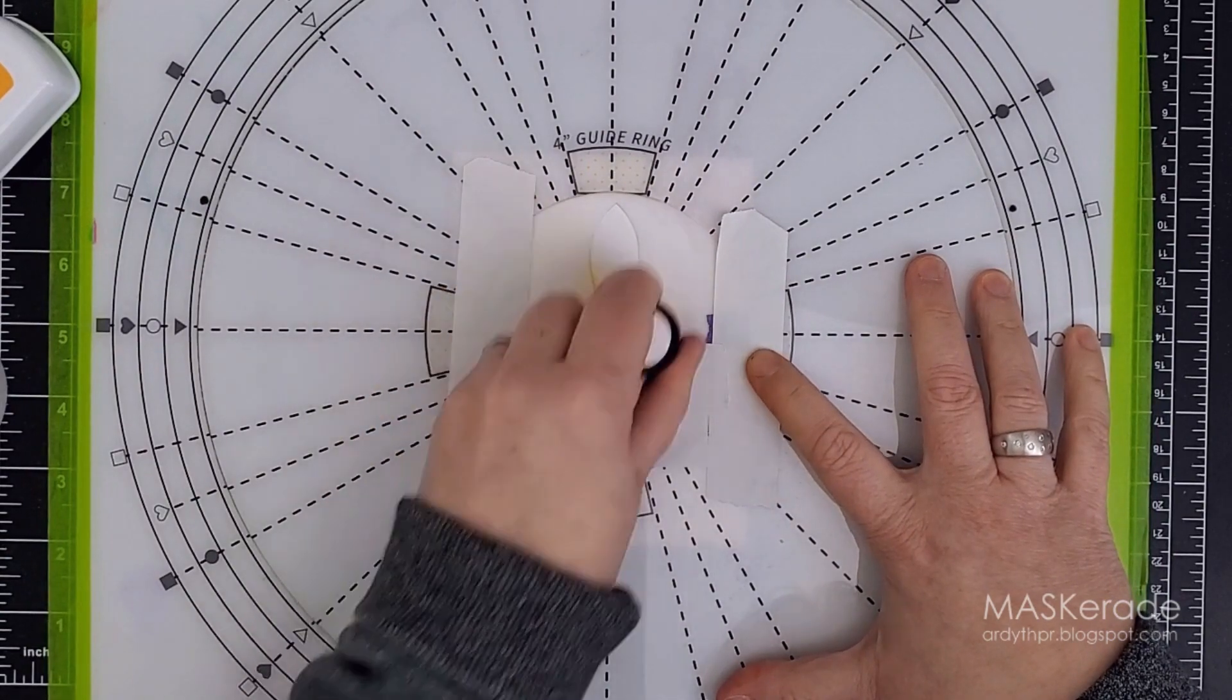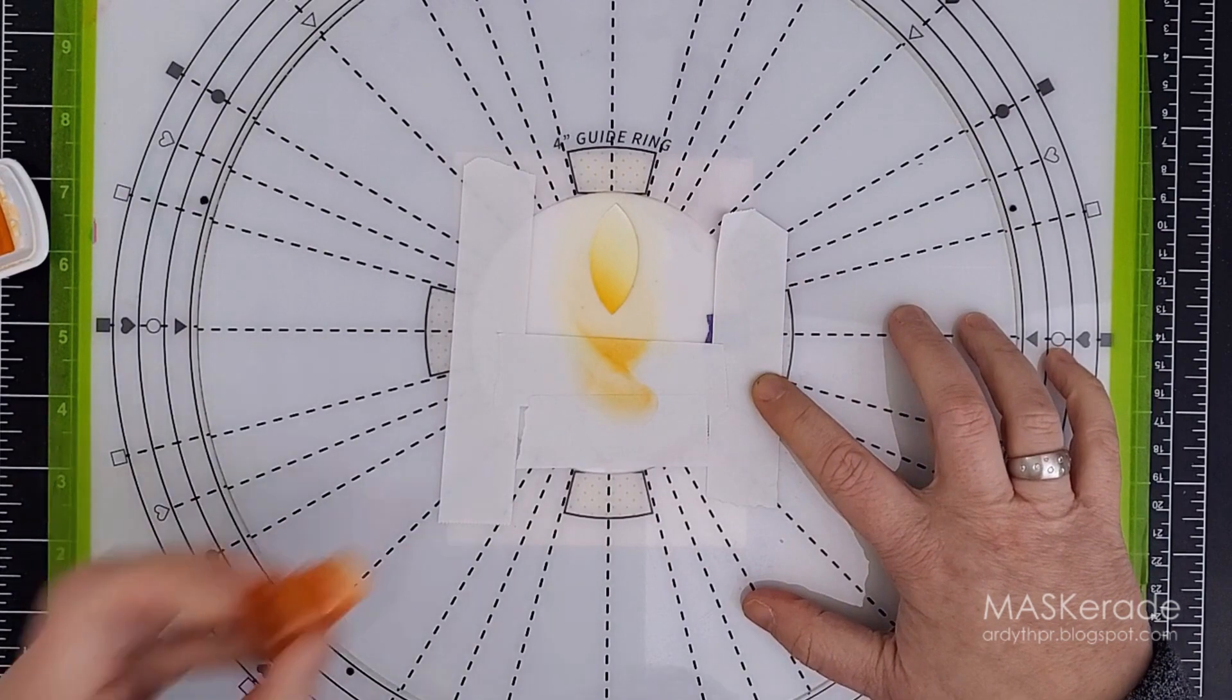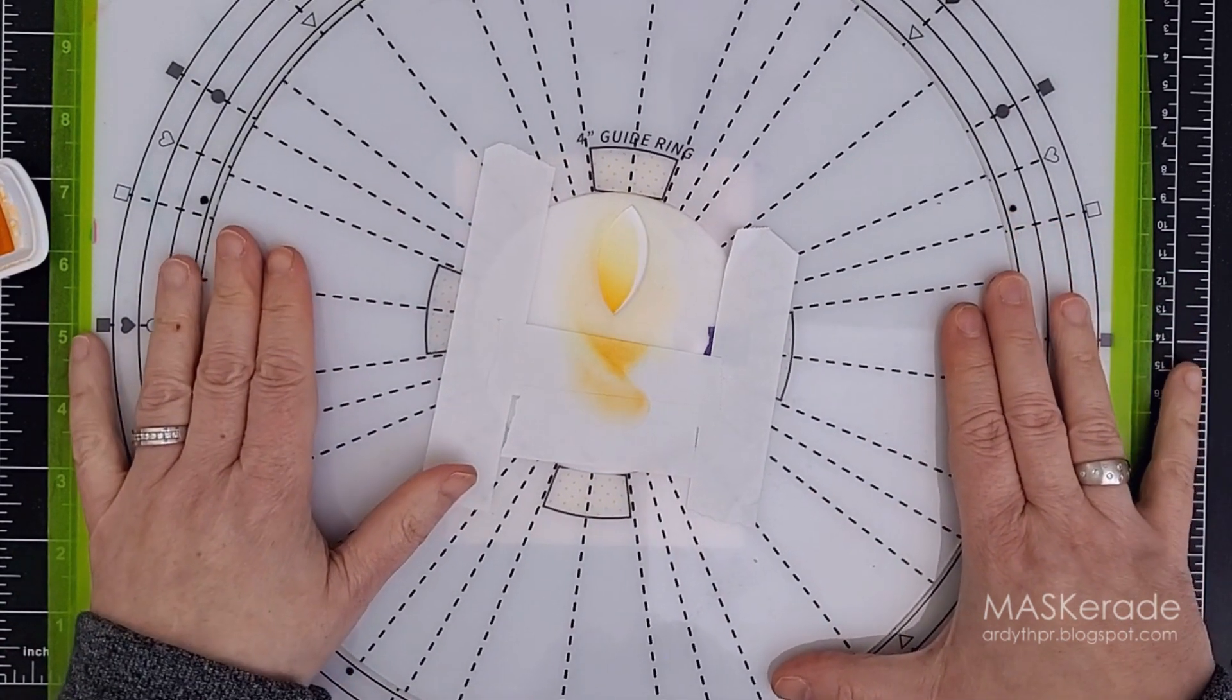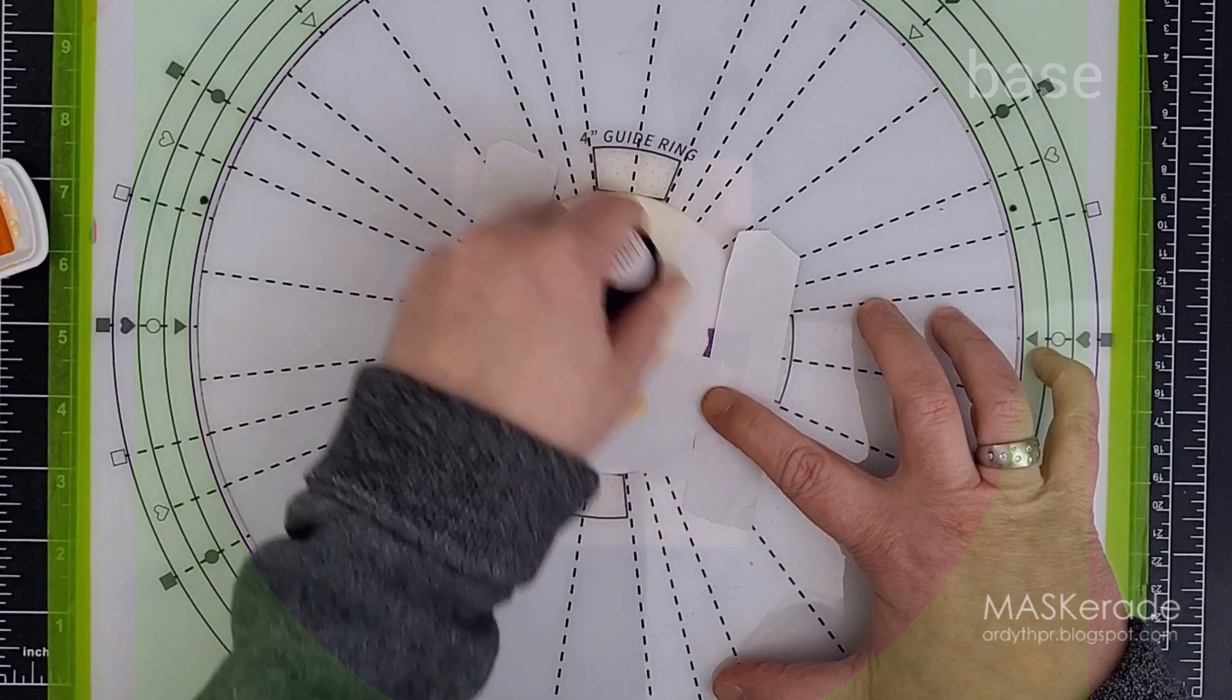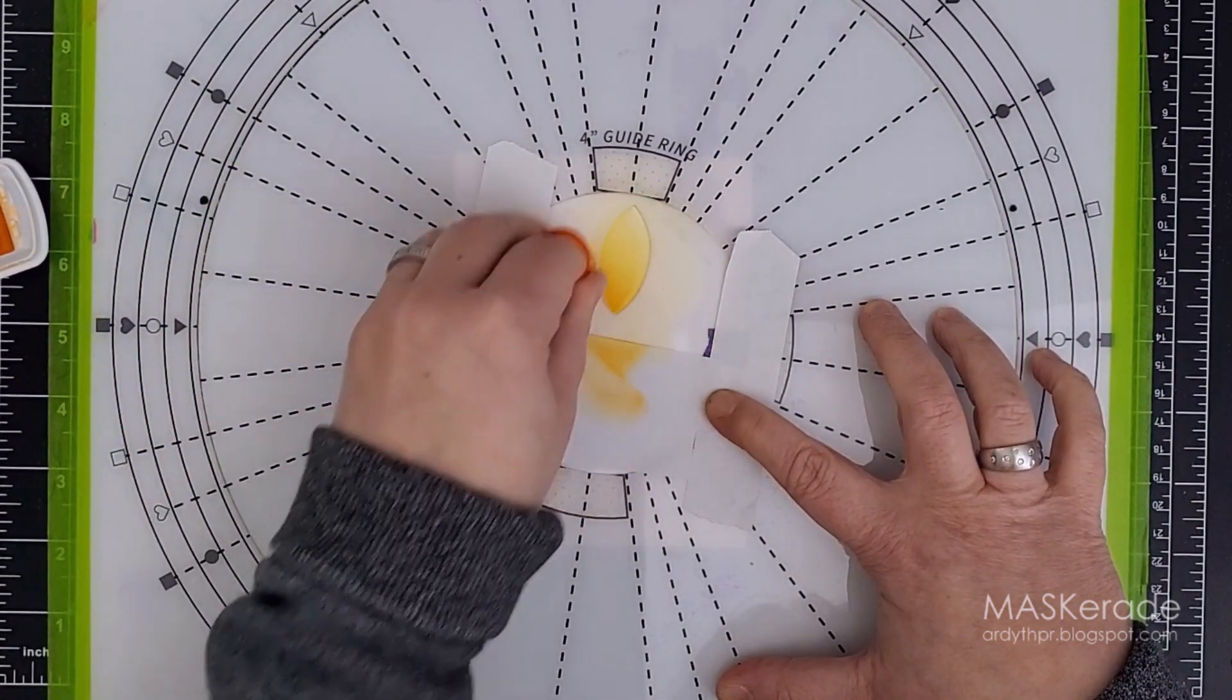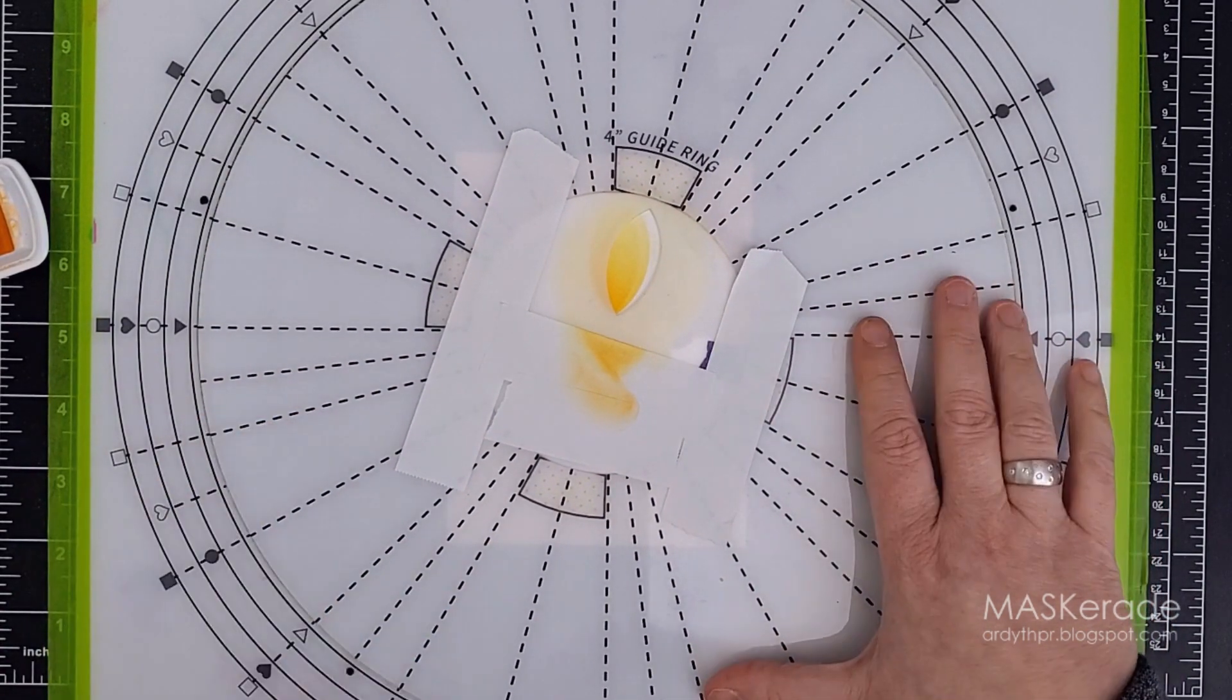I added some depth with some Tiki Torch ink and a dauber just on the bottom edge of the petal. Next, here's the unique and oh-so-fun part of this tool. You rotate the stencil within the base, lining up the markings on the stencil guide with the base for precise angles. Here I moved it about seven degrees to the right and then blended the yellow and orange inks through again. Then I moved another seven degrees to the right and blended the ink again.